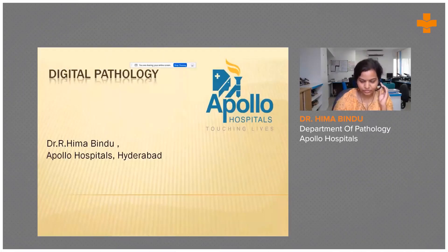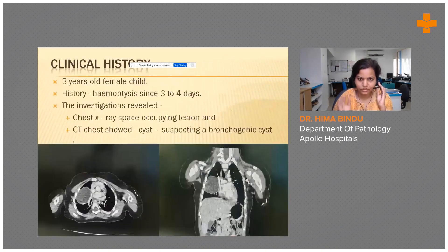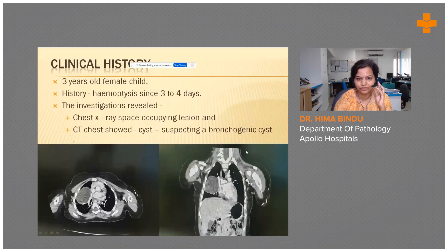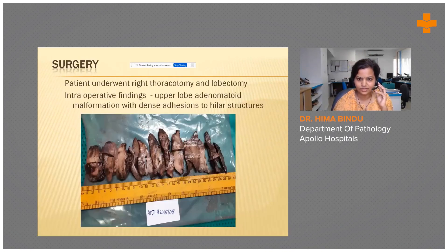I'll be presenting a case of a three-year-old female child who came with a history of hemoptysis since three to four days. The radiological investigations revealed a cystic lesion in the right lung, which was clinically and radiologically suspected to be a bronchogenic cyst.